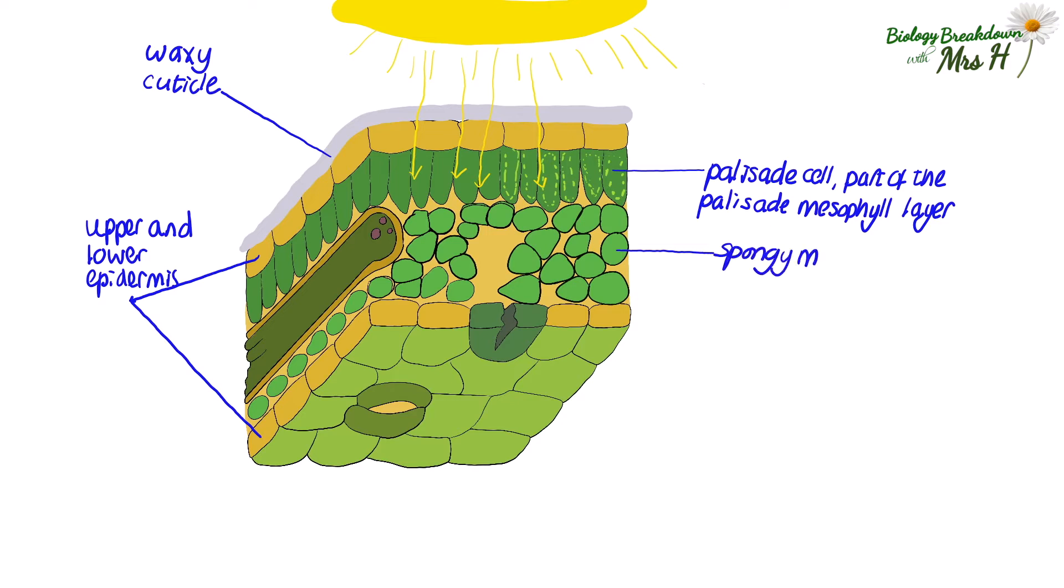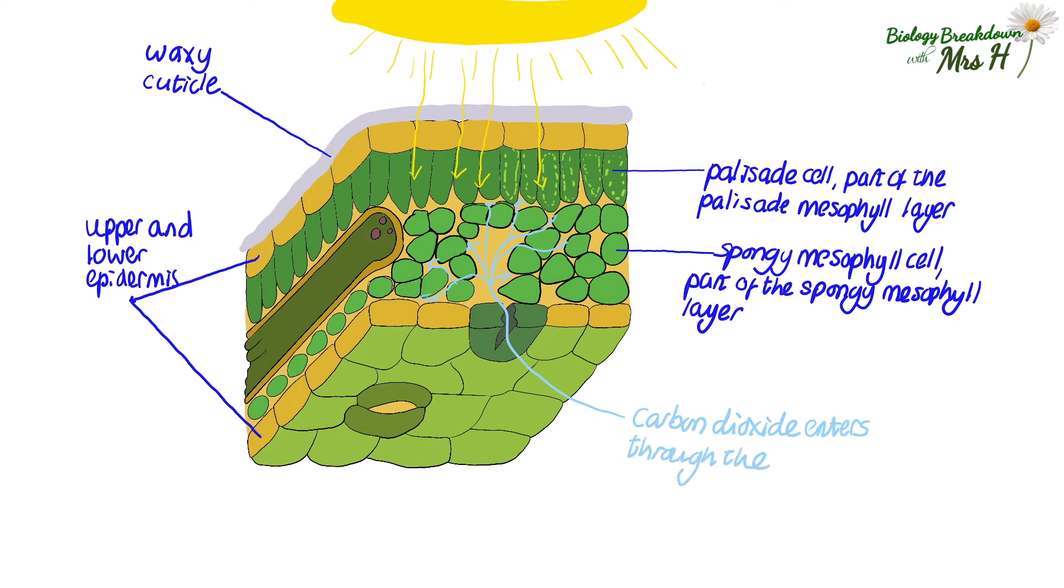This is a spongy mesophyll cell and it's part of the spongy mesophyll tissue layer. Notice the air spaces within this tissue layer. The air spaces are important so that carbon dioxide can diffuse to as many cells as possible. Carbon dioxide enters the leaf through tiny pores on the underside called stomata. Either side of the stomata are guard cells and we can see the vascular tissue that brings water to the photosynthesizing cells.